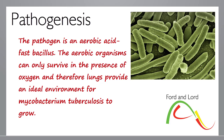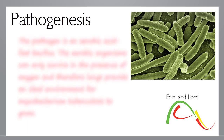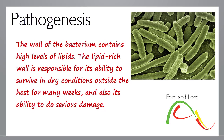The pathogen is an aerobic acid-fast bacillus. Aerobic organisms can only survive in the presence of oxygen, so the lungs provide an ideal environment for Mycobacterium tuberculosis to grow. The wall of the bacterium contains a high level of lipids. This lipid-rich wall is responsible for its ability to survive in dry conditions outside the host for many weeks, and also its ability to do serious damage.